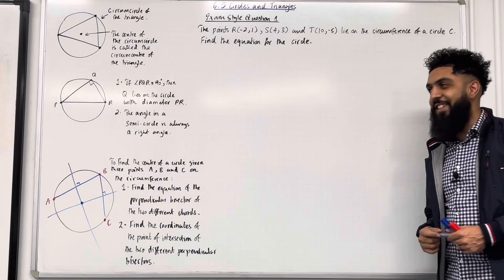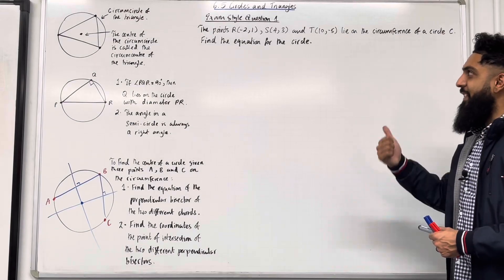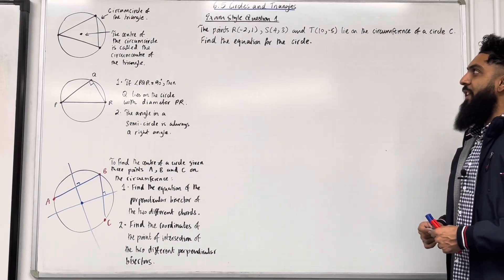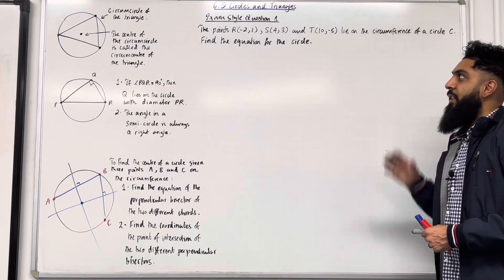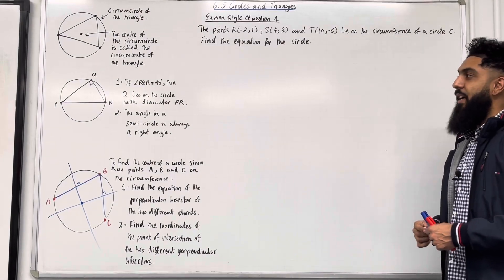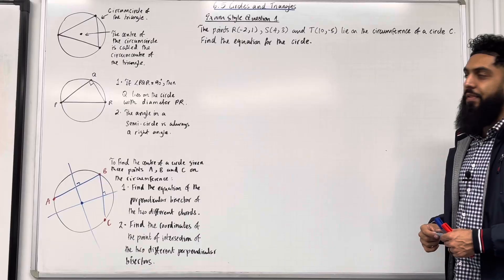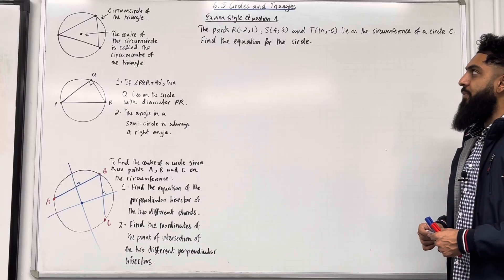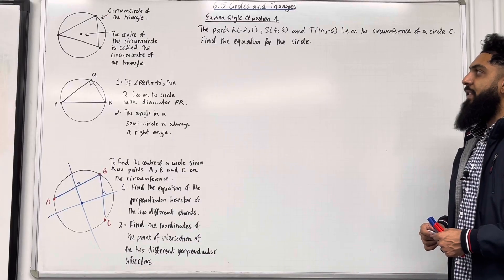Welcome back. In this teaching video I'm looking at 6.5 Circles and Triangles. 6.5 represents chapter 6, section 5 of the Pearson A-level Maths Pure Maths Year 1 textbook.